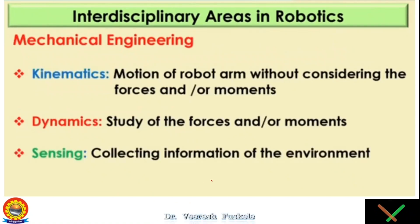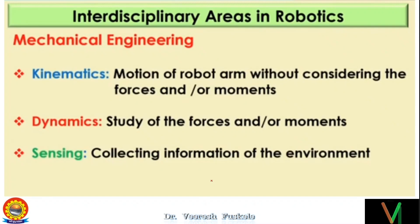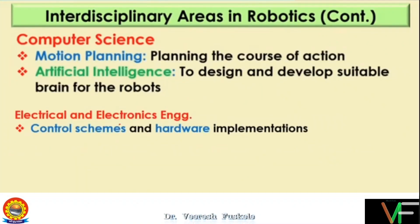There are internal sensors and external sensors. Though sensing is a part of electrical and electronics also, previously robots were mainly driven by mechanical means like gears, belt drives, and chains — that's why the sensing part has been kept in the mechanical portion. But nowadays, the sensors we are using are mostly electrical or electronic.